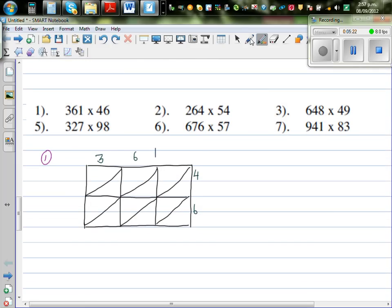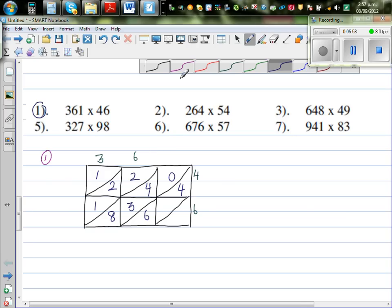I want you to practice this. I'll do one example quite fast. So this is 361 times 46. Make a grid like this and just multiply. So 3 times 4 is 12. 6 times 4 is 24. 1 times 4 is 4. 3 times 6 is 18. 6 times 6 is 36. And 1 times 6 is 6.